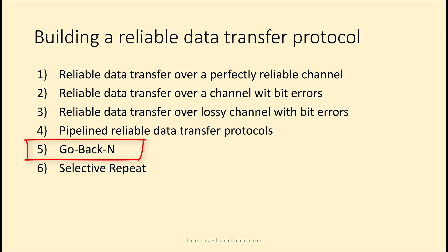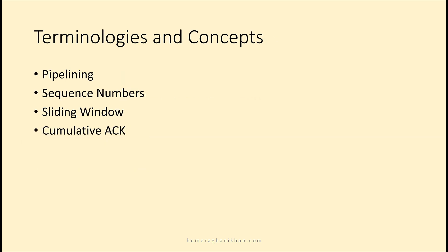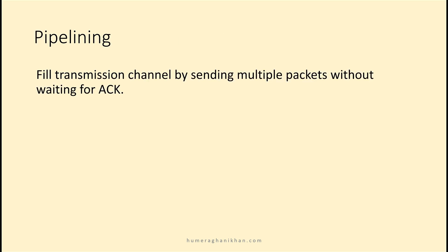Go-Back-N is the fifth protocol of our reliable data transfer protocol series. Now we are going to discuss some new terminologies and concepts necessary to understand the operation of Go-Back-N protocol. These are: pipelining, sequence numbers, sliding window, and cumulative acknowledgements. Pipelining is a technique which allows us to send multiple packets on a transmission channel.